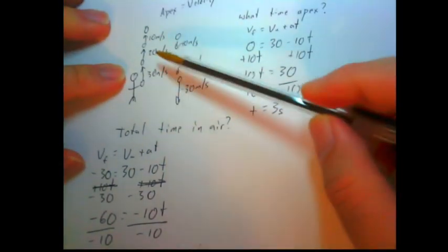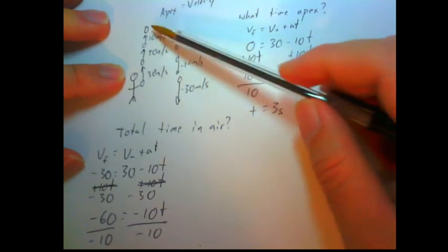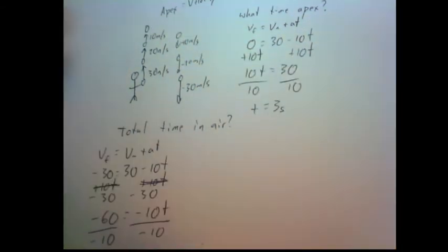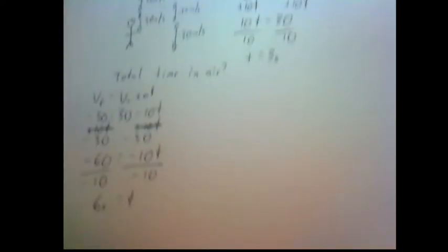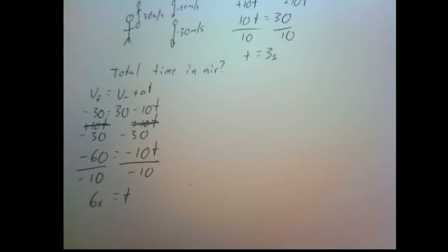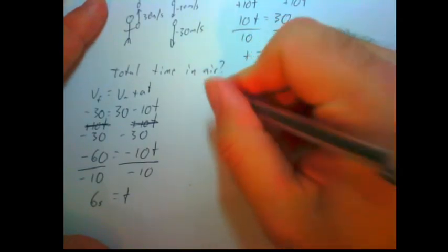And that matches up with our dot diagram, right? One, two, three, four, five, six seconds in the air. Six seconds to return to where it started. Let's move this up a little so you can see the bottom. Six seconds equals time. But I told you there was a second way to solve for the total time in the air.